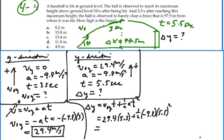So if I do this on the calculator, 29.4 times 5.5 is 161.7. And then I'm going to have negative 4.9 times 5.5 squared is minus 148.2. And this gives me 13.5 meters.